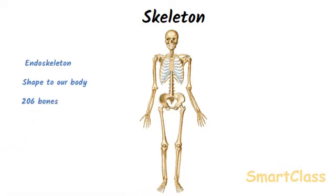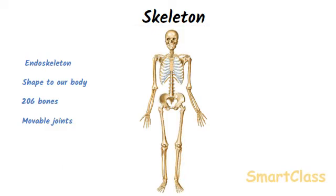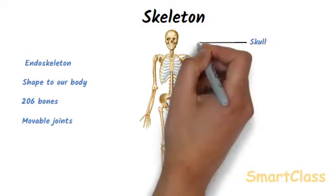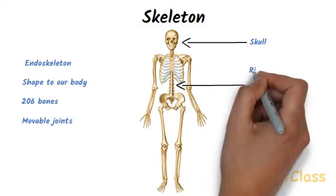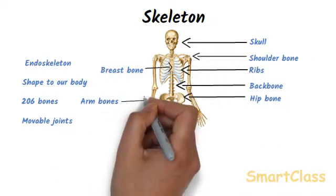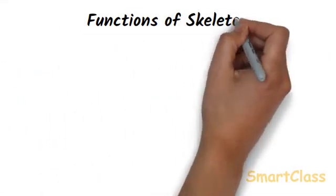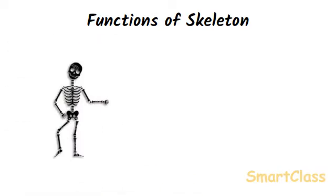There are 206 bones in the human skeleton. These bones are interconnected through joints to form various parts of the body. Our skeleton has movable joints between various bones which allow the muscles to move the head, shoulders, arms, legs, and other parts of the body. The skeleton consists of skull, backbone, ribs, breast bone, shoulder bones, hip bone, arm bones, and leg bones.